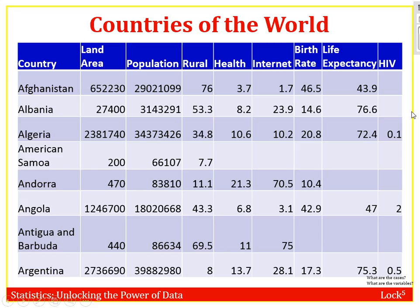So here's another example. See if you can identify the cases and identify what the variables are. The cases are each individual country going across — so Algeria going across, American Samoa going across. Our variables are what we have at the top: we're collecting population, land area, rural (probably percent rural), health, internet, and so on.